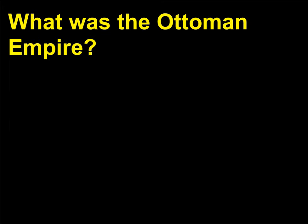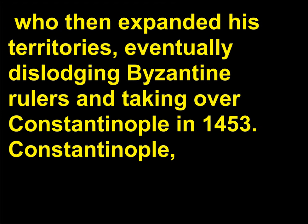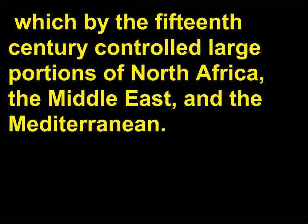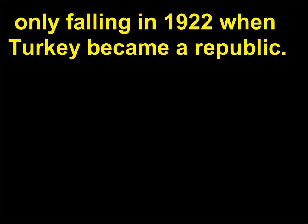What was the Ottoman Empire? The Ottoman Empire was a Turkish state founded in the 13th century by Osman, who then expanded his territories, eventually dislodging Byzantine rulers and taking over Constantinople in 1453. Constantinople, now called Istanbul, became the capital of the Ottoman Empire, which by the 15th century controlled large portions of North Africa, the Middle East, and the Mediterranean. The Ottoman Empire was one of the longest-lasting powers in history, only falling in 1922 when Turkey became a republic.